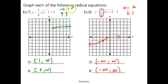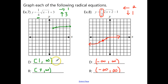For Example 7 with the square root function: shift right 1 and up 3, with a compression by a factor of one-fourth. Move the origin right 1 up 3. From there go over 1 up one-fourth instead of the full 1, and over 4 up one-half instead of 2. Domain is [1, ∞) and range is [3, ∞).